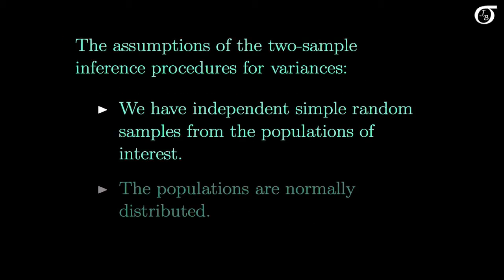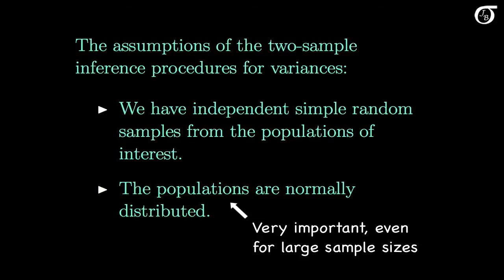Here are the assumptions of the two-sample inference procedures for variances. We need simple random samples from the populations of interest, and we need those two samples to be independent. It's always important in statistics to have a good sampling design, and if we have a biased sampling design, then the results may be very misleading. And we need the populations to be normally distributed. It turns out that in inference procedures for variances, this is an extremely important assumption, even for large sample sizes. For many violations of the normality assumption, these procedures work very, very poorly — so poorly that using these procedures is always a bit dubious.